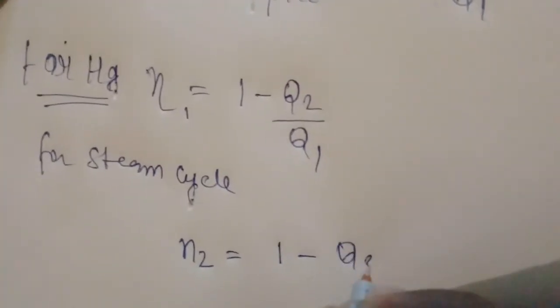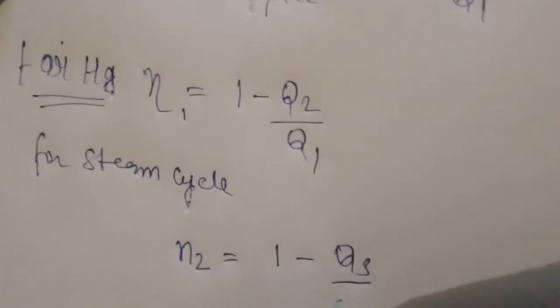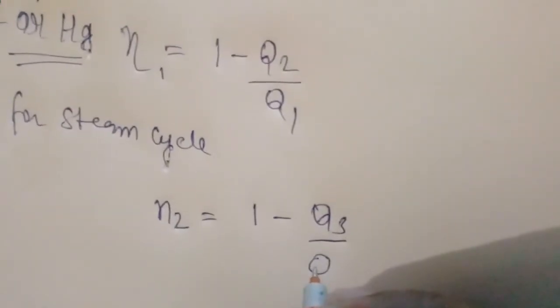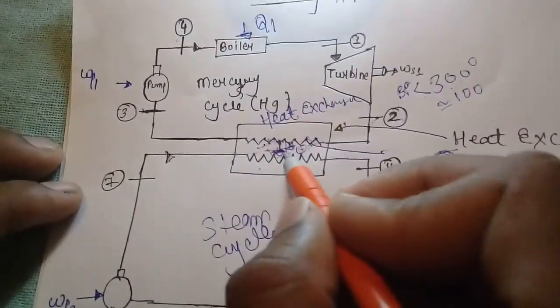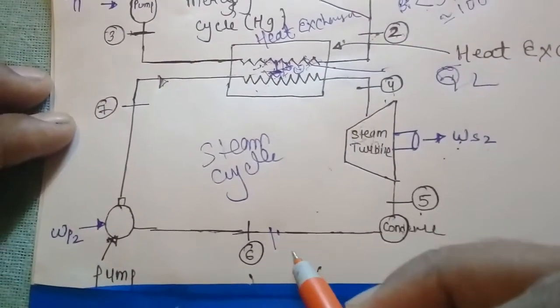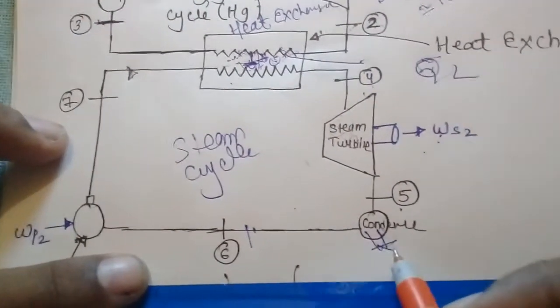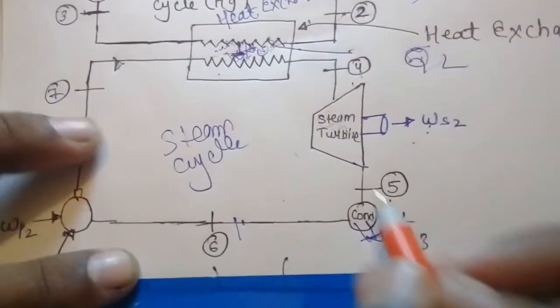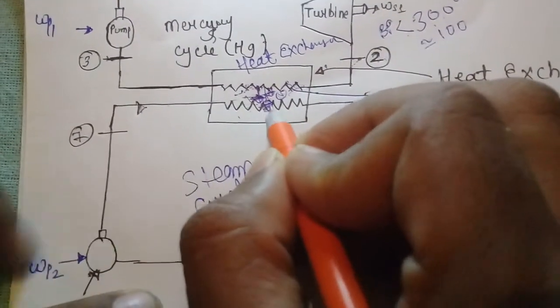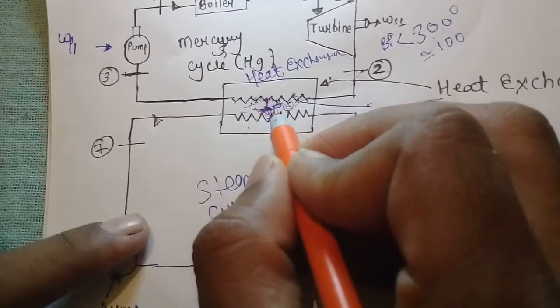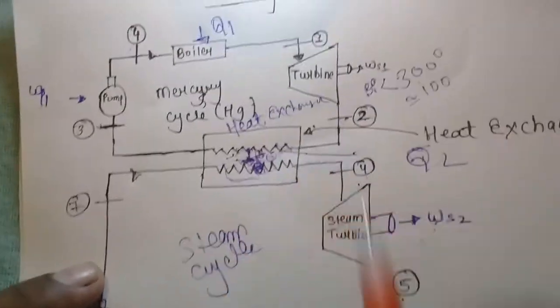For the steam cycle, the efficiency is 1 minus Q3 by Q2. Q3 is the amount of heat going out from the system through the condenser. Q2 is the heat given to the system by the heat exchanger of the mercury cycle and the boiler for the steam cycle.